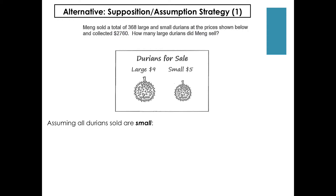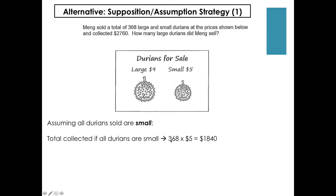In this strategy, we have to make a certain assumption — we can either assume that all the durians are small or all the durians are large. I'm going to show you both; both will get the same answer. In the first part, I'm going to assume that all durians sold are small. Since each small durian is $5, if you assume all durians are small, then 368 multiplied by $5 gives $1,840.